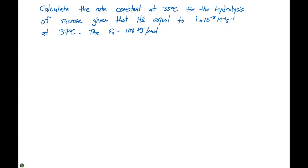We are given an activation energy of 108 kilojoules per mole. This is a direct application of the two-point Arrhenius equation, where ln(K2/K1) equals the energy of activation divided by R, times one over T1 minus one over T2.